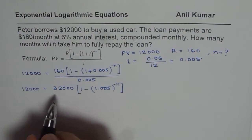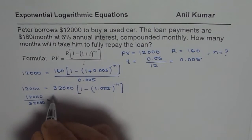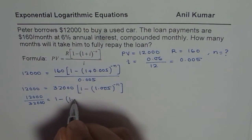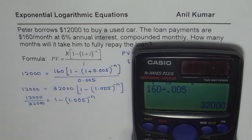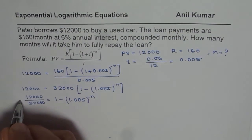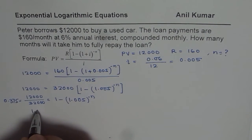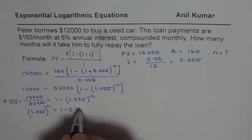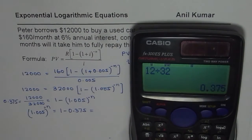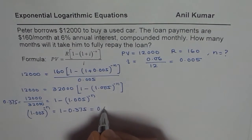These are simple steps to follow. Now divide both sides: 12,000 divided by 32,000 equals 1 minus 1.005 to the power of minus N. Calculating 12 divided by 32 gives 0.375. Rearranging the equation, we have 1.005 to the power of minus N equals 1 minus 0.375, which equals 0.625.